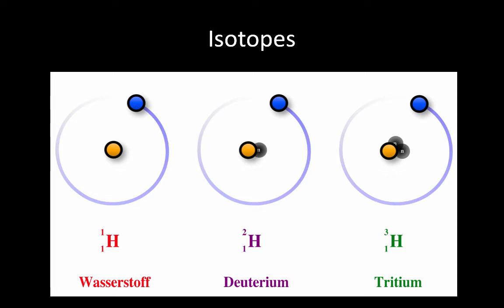Wasserstoff on the left has no neutrons, deuterium in the middle has one neutron, and tritium on the right has two neutrons. This makes their mass numbers 1, 2, and 3 respectively.